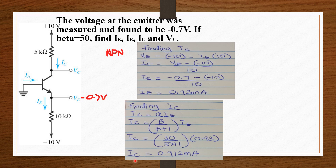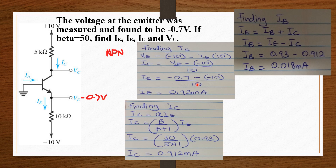Knowing IE and IC, we use the general formula IE equals IB plus IC to find IB. Making IB the subject: IB equals IE minus IC. Inputting our values, IB equals 0.018 milliamperes.